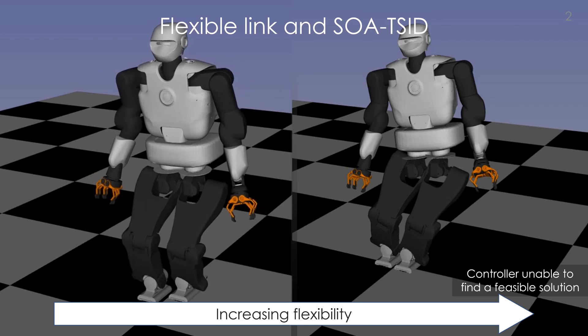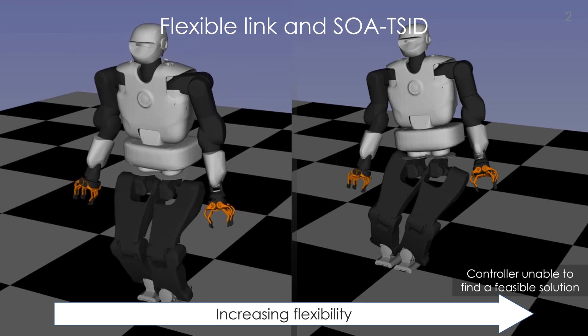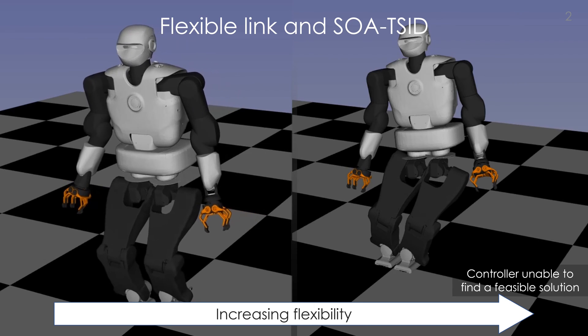In this work, we present a whole-body controller that allows a robot with flexible links to walk in a rigid environment.